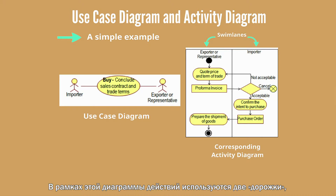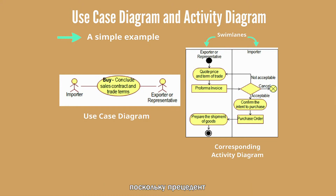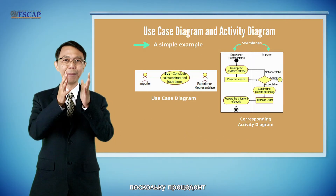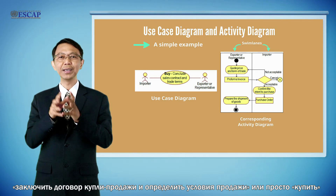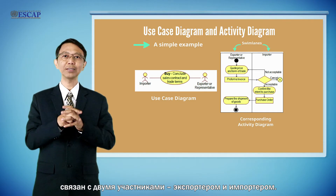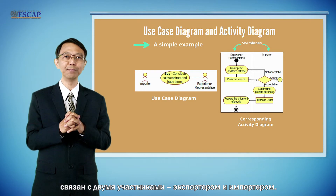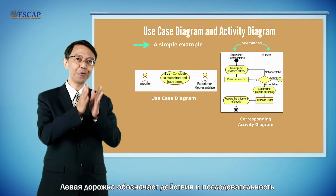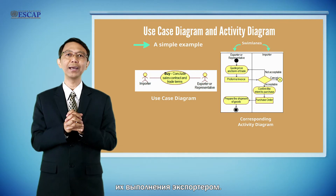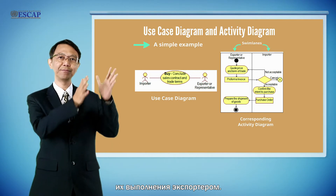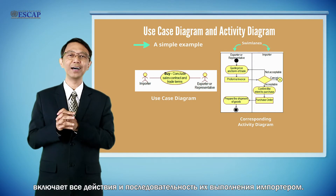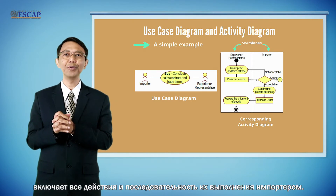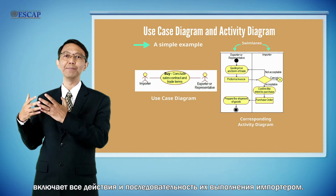You could notice that there are two swim lanes within this activity diagram. Since the 'buy' or 'conclude sales contract and trade terms' use case involves two actors — namely exporter and importer — the activities and their flow carried out by an exporter are in the left swim lane, and the activities carried out by the importer are in the right swim lane.